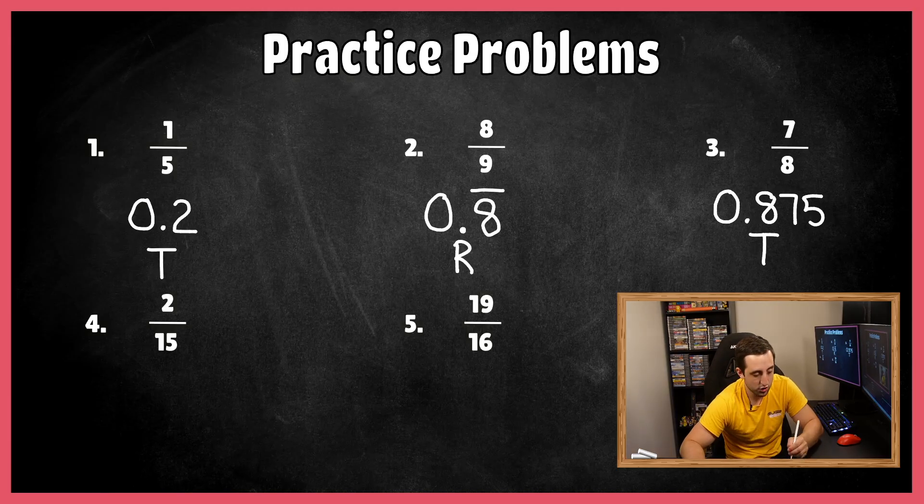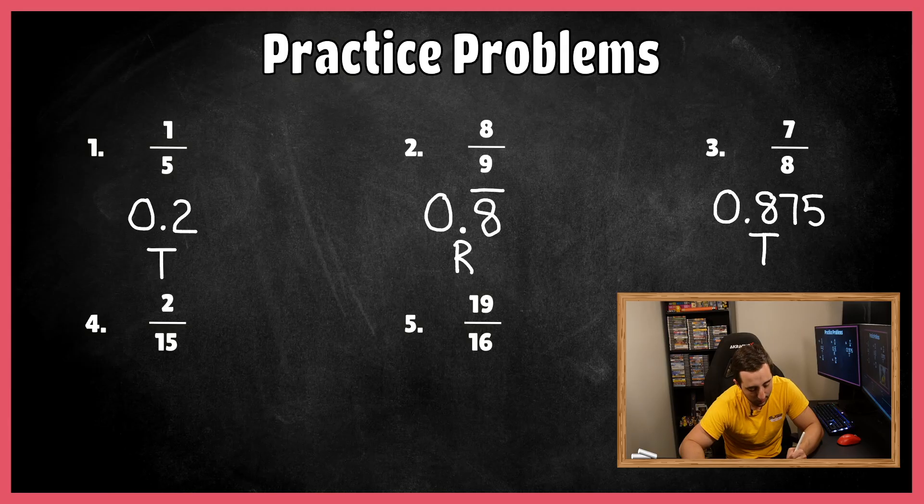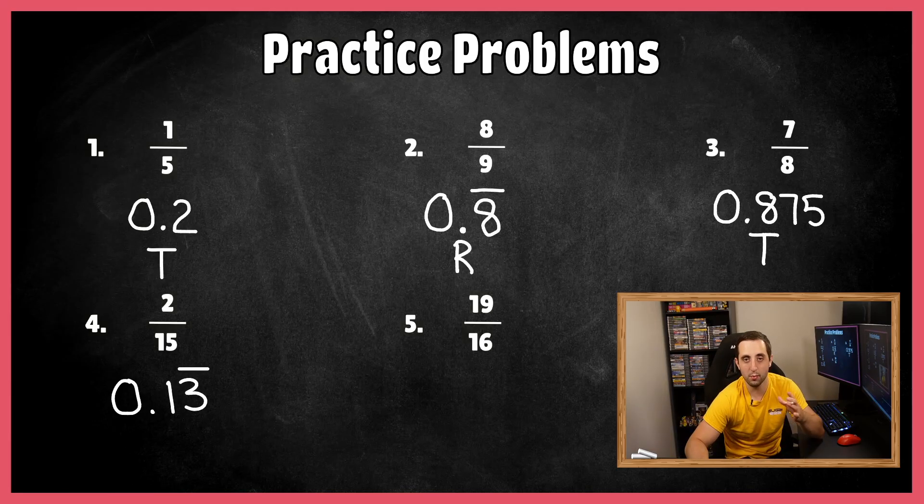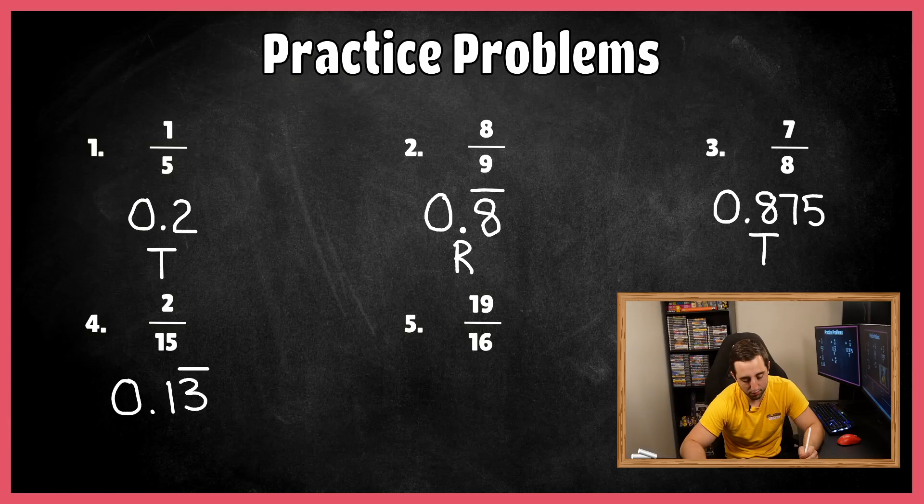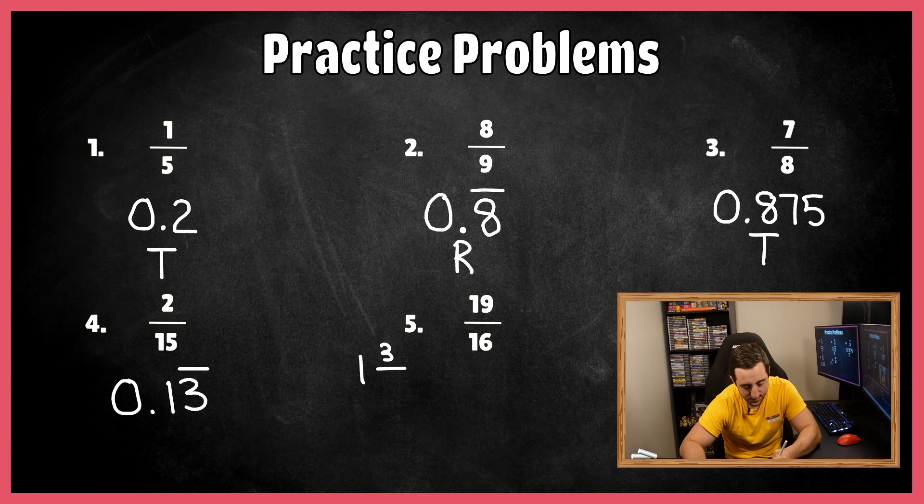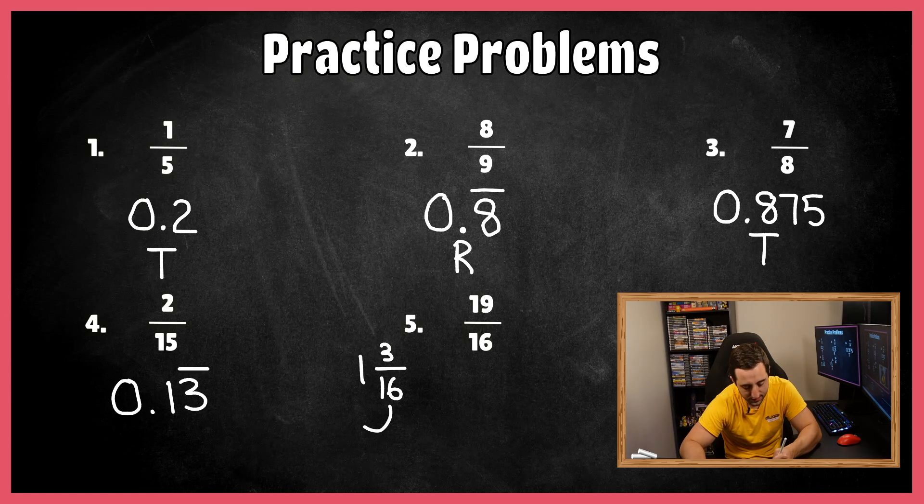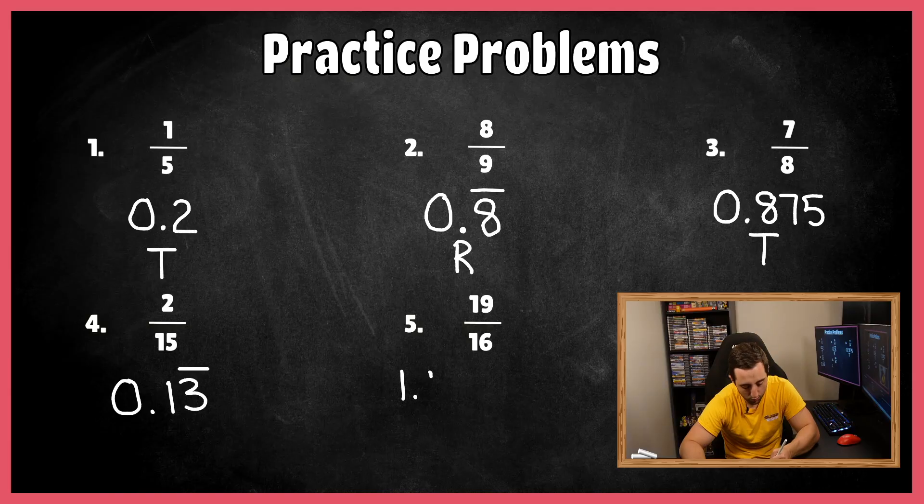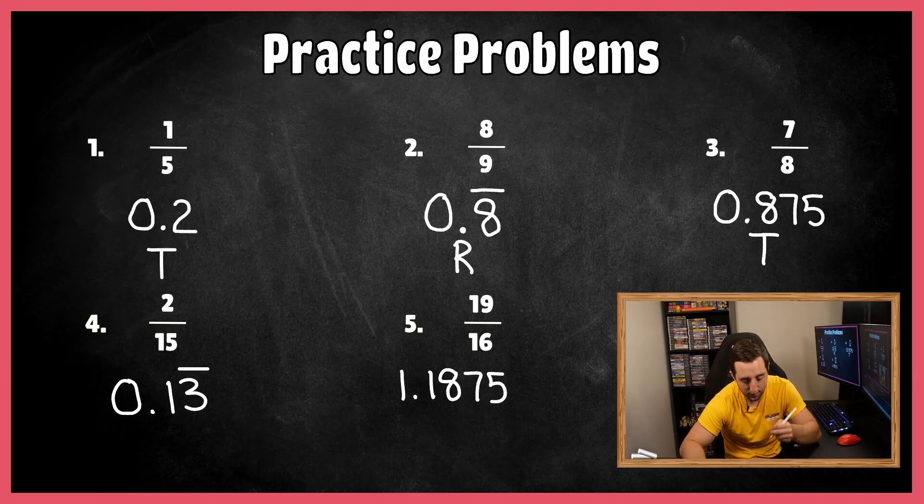And then for number four, two-fifteenths, you end up getting a repeating decimal of 0.13, but there's only a bar notation above the three because the three is repeating but not the one. So don't put the bar notation over both. And then finally, the last one being an improper fraction. Now, remember, if this was a mixed number, this would have been 1 and 3 sixteenths because when you convert it back, well, 16 times 1 is 16 and then add 3 and you end up getting 19 sixteenths. For your final answer for this one, you should have gotten 1.1875 for your final answer.